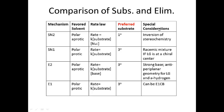Here are some special considerations to help discern between the different mechanisms. SN2 always proceeds with inversion of stereochemistry — the incoming nucleophile and the departing leaving group have different orientations. For SN1, you get a racemic mixture of products if the leaving group is at a chiral center.